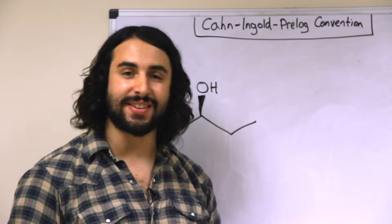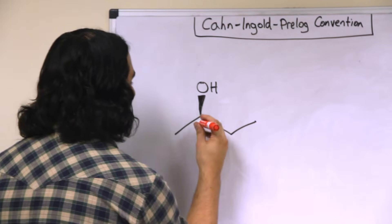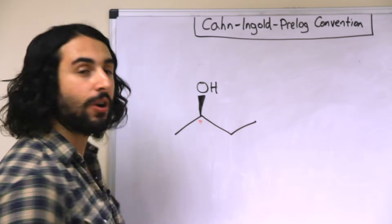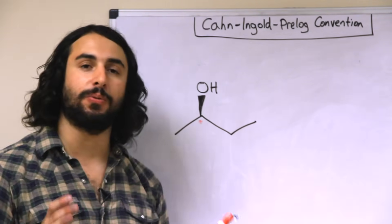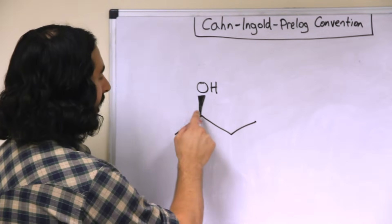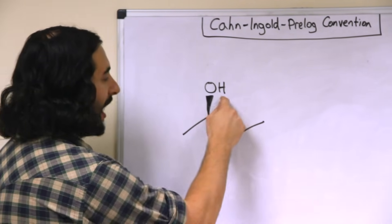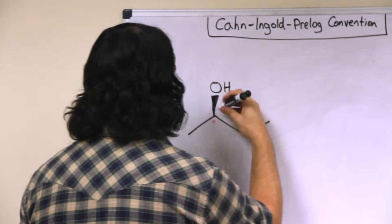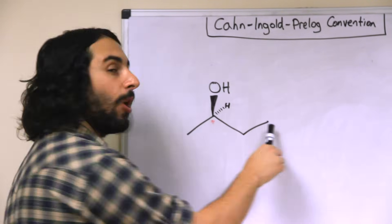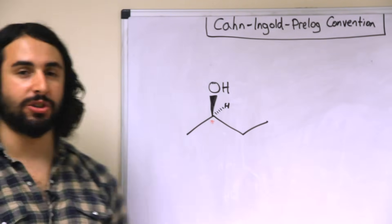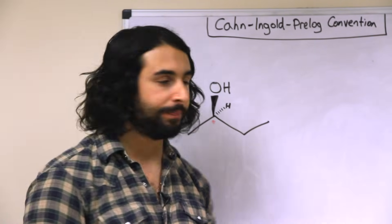First we have to identify any chiral center. Here we can see that there is one chiral center on this molecule because this carbon is connected to four different groups: it is connected to a hydroxyl group, the implied hydrogen — which I'll go ahead and draw right now — a two-carbon chain, and a one-carbon chain. Four different groups: that is a chiral center.